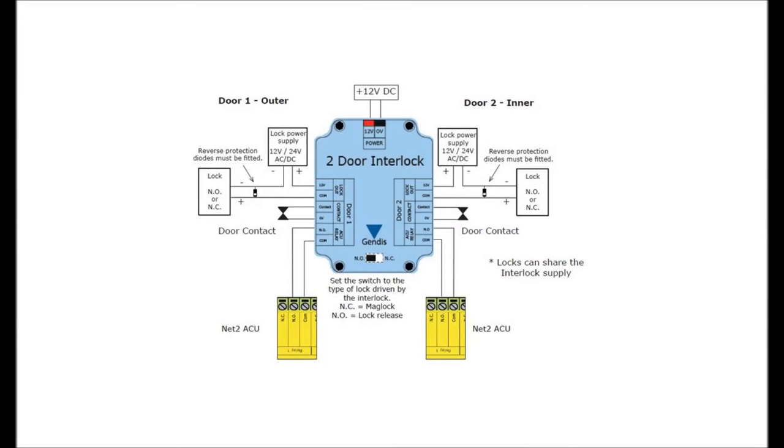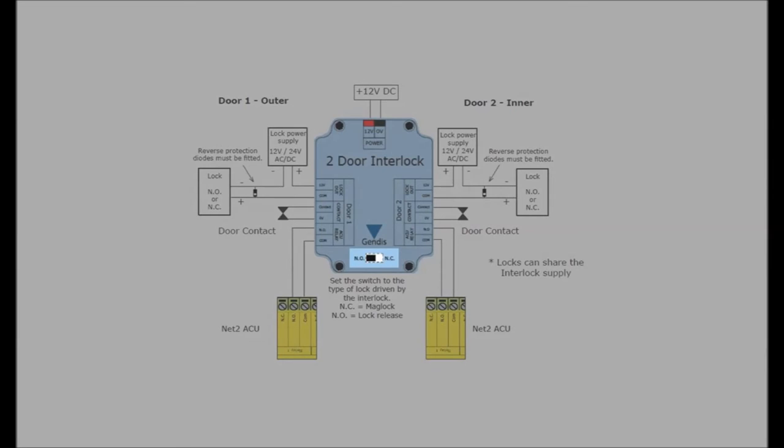In relation to this, you can use a 24V lock, but you will need 12V for the interlock unit power. At the bottom of the wiring label is the normally open and normally closed slide switch. It is important when installing the device to ensure the switch is fully seated at the correct side to your configuration.